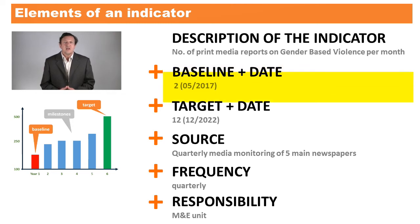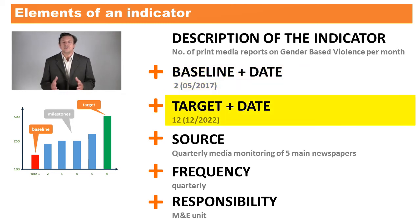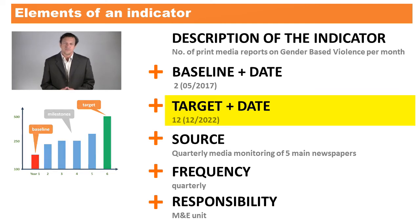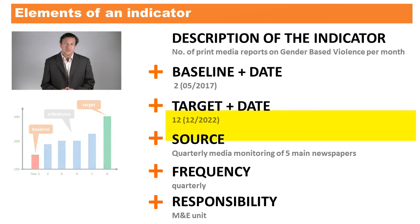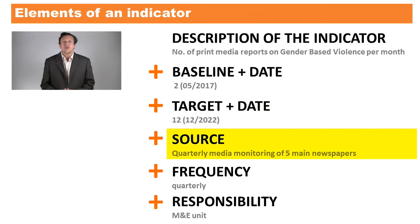Further, an indicator target. This is the desired status of the indicator at a defined time in the future. The source describes where the data for the indicator is coming from. The source is sometimes also called means of verification.